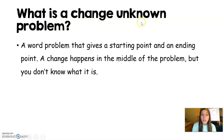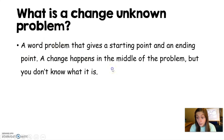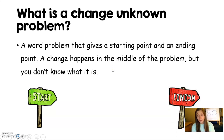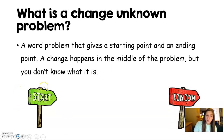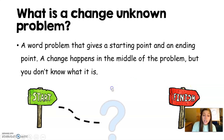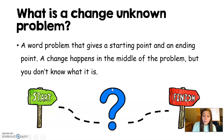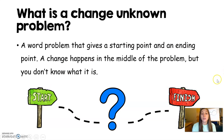What is a change unknown problem? A change unknown word problem is a word problem that gives a starting point and an ending point. So you know where you start in the problem and you know where you end. But there is a change that happens in the middle of the problem — I put a question mark because we don't know what the change is. We know what we start with and we know what we finish with, but in the middle a change happens and we don't know what that change is.